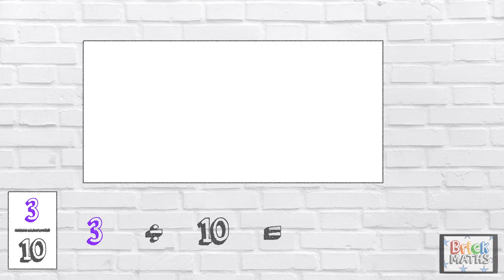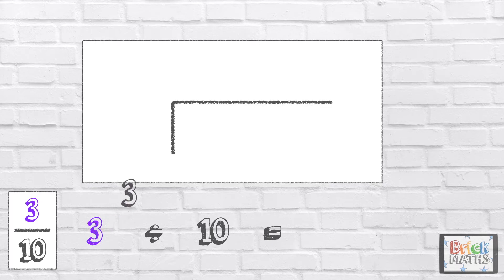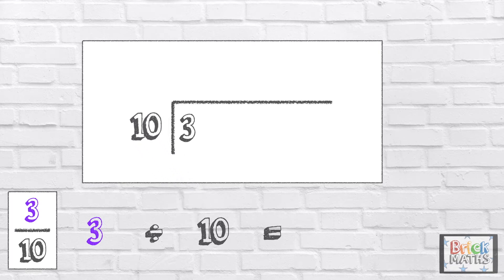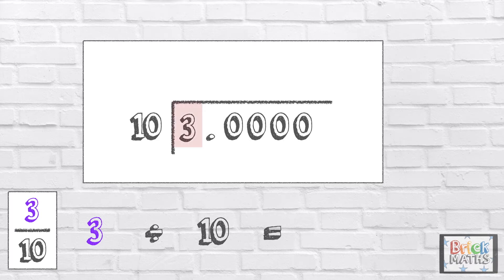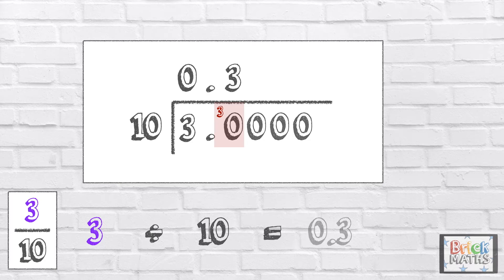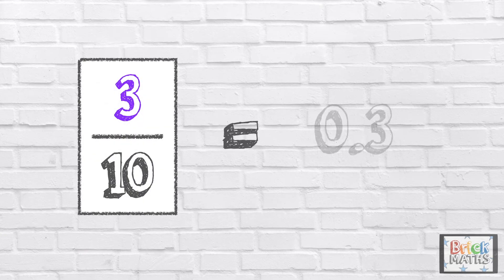Now we need to calculate the decimal equivalent by finding the answer. We can use short division to work out the answer. So 3 is the number being divided — we call this the dividend. And 10 is the number that we are dividing it by — we call this the divisor. Because we are dividing a smaller number by a larger number, we need to use a decimal point and some zeros as placeholders. How many tens go into 3? 0 with 3 left over. Make sure you line up the decimal point in the same place. Now how many tens go into 30? 10 goes into 30 3 times with no remainders, so we don't need to calculate any more. So 3 tenths is equal to 0.3.